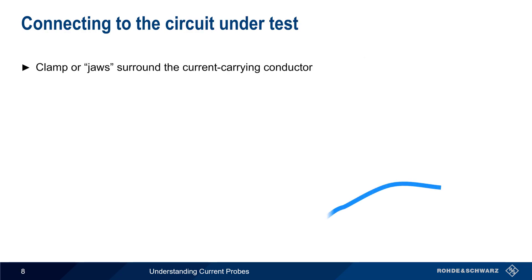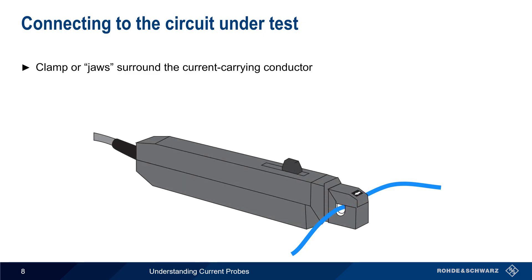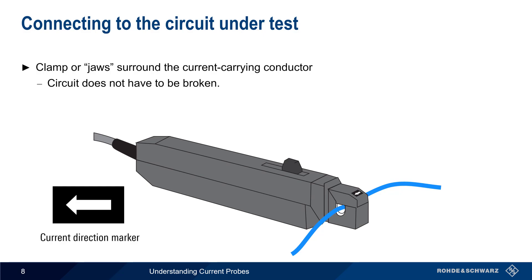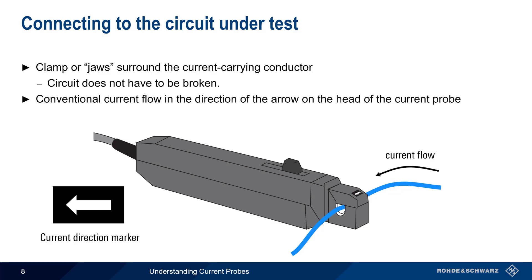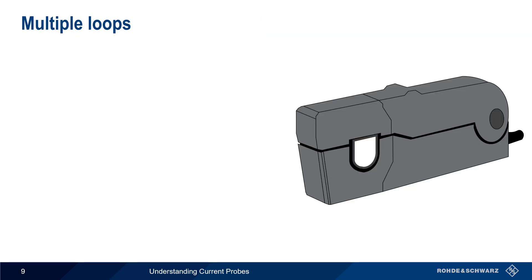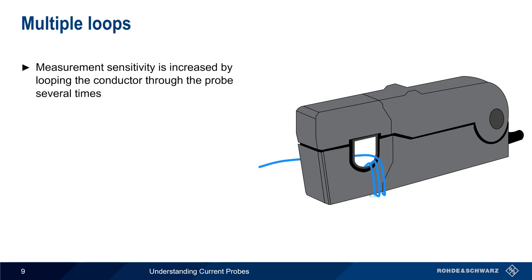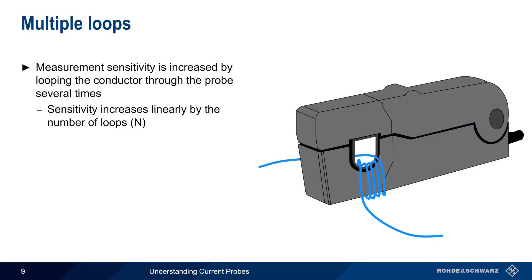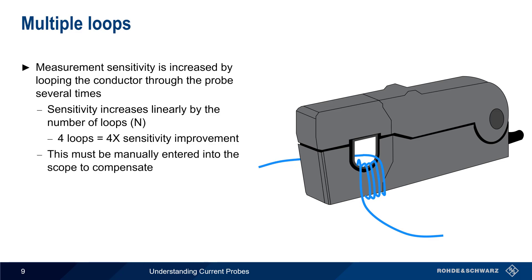Using a clamping style current probe is very simple. The clamp or jaws are opened and then closed around the conductor. Using these clamping or split-core probes has the advantage that the circuit does not need to be broken. Remember that current probes have a direction of current marker — this arrow indicates the direction of conventional, that is plus-to-minus, current flow in the measured conductor. Current probes will still work if connected backwards, but the sign of the measured current will be reversed. One technique to improve measurement sensitivity is looping the conductor through the probe several times; sensitivity increases linearly with the number of loops. Since the scope has no way to know how many times the conductor has been looped, this value must be manually entered into the scope.